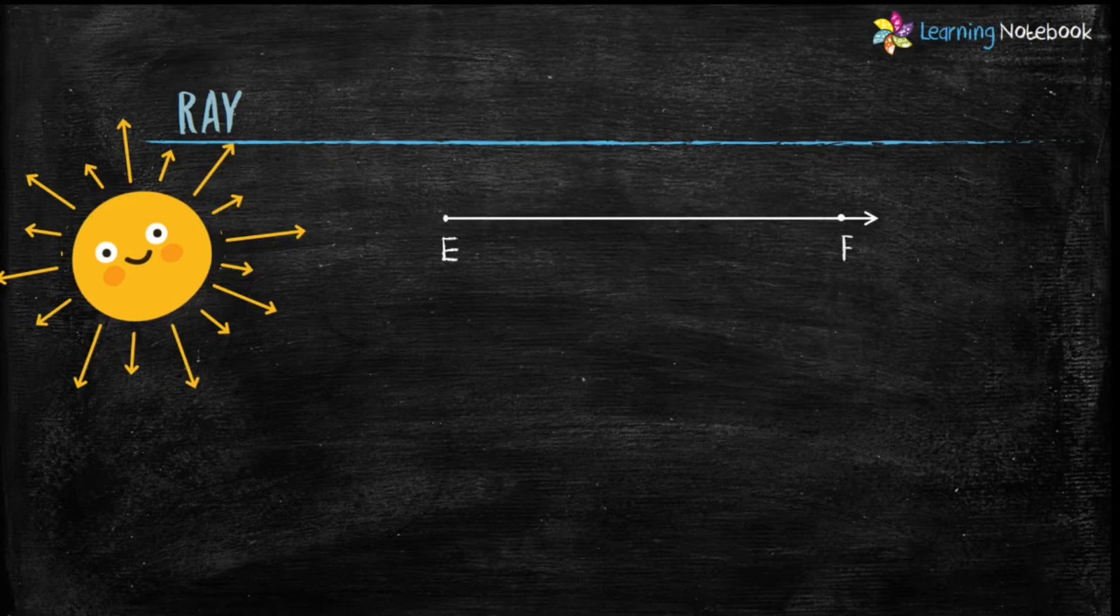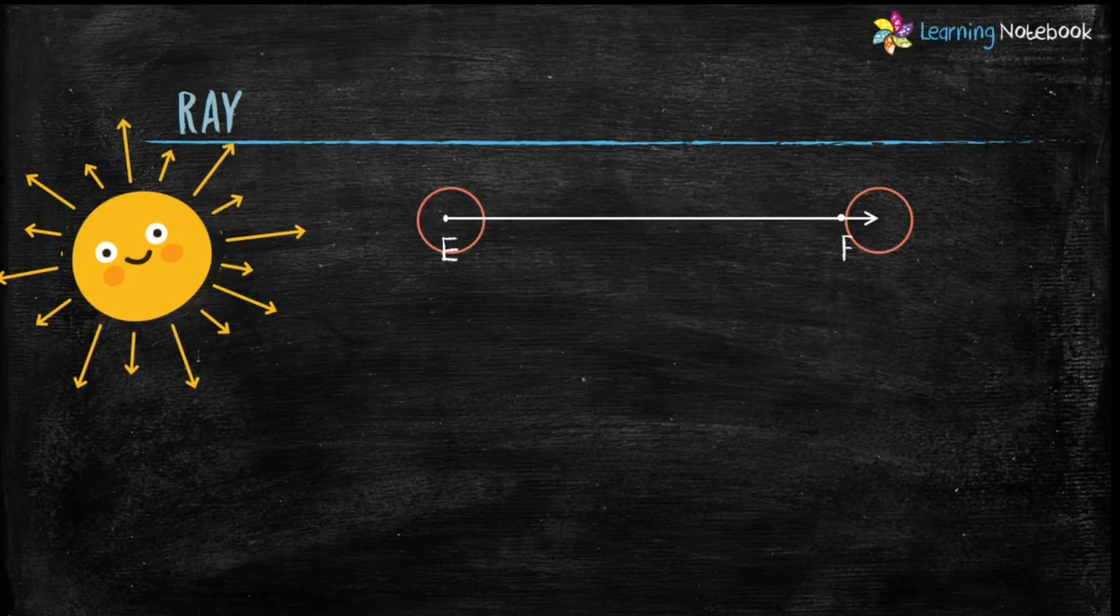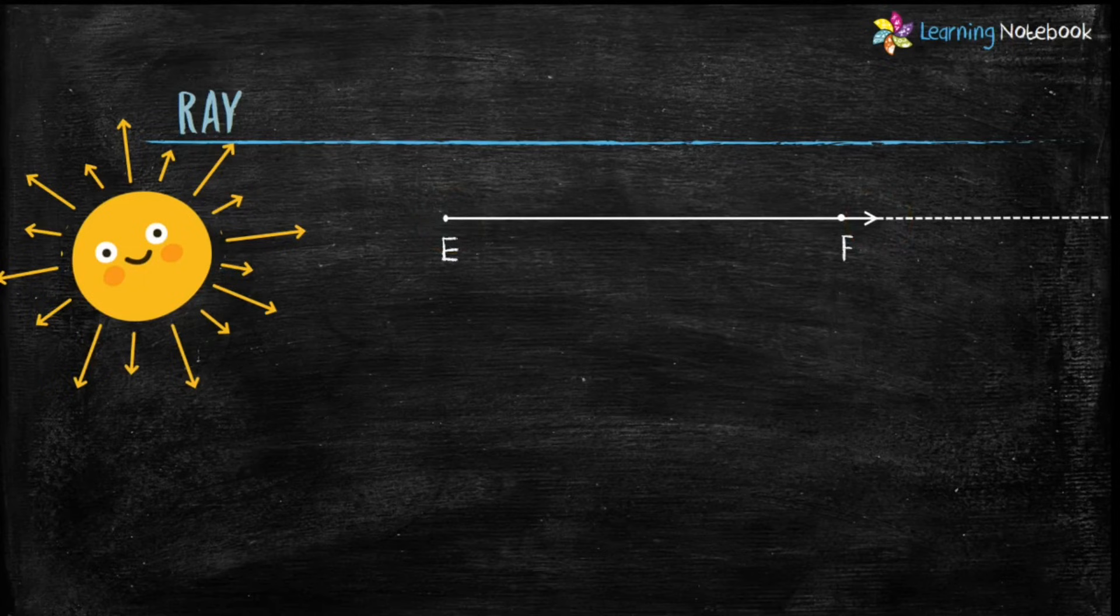Like the rays of the sun extends only in one direction, in the same way you can see in this figure that there is an arrow at one side and a point at another side. This means that a ray can be extended only in one direction.